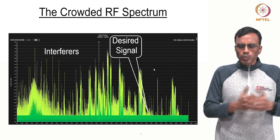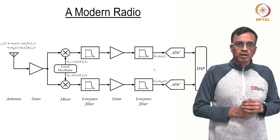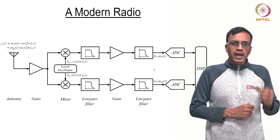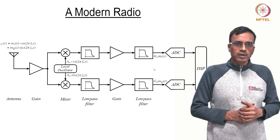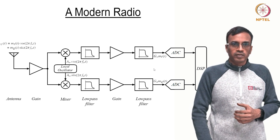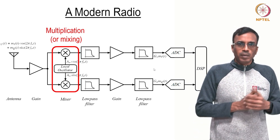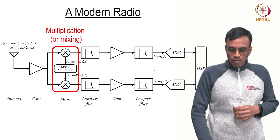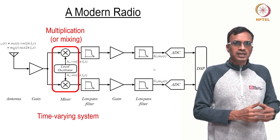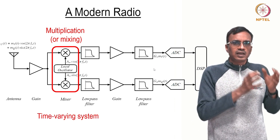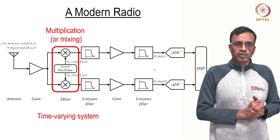How does this work? It turns out that if you look at the block diagram of a modern radio, the aspect that enables this to happen is the process of mixing or multiplication. Multiplication is a time varying operation. It turns out that this is the key to making a modern radio receiver work.